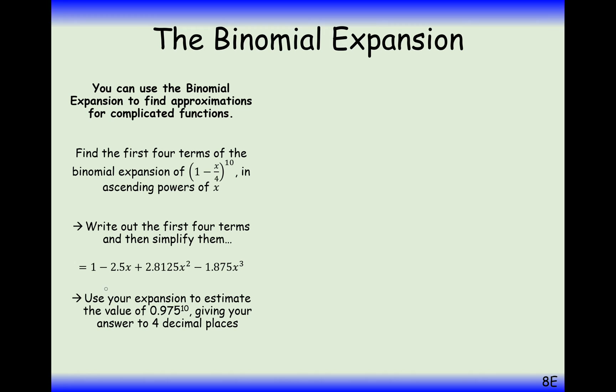Part B is now we're going to use this binomial expansion here to approximate 0.975 to the power of 10. So what we're effectively going to have to do here is use what's inside our bracket here as the value of 0.975 to the power of 10. So if 1 minus x over 4 equals 0.975, what does x have to be?